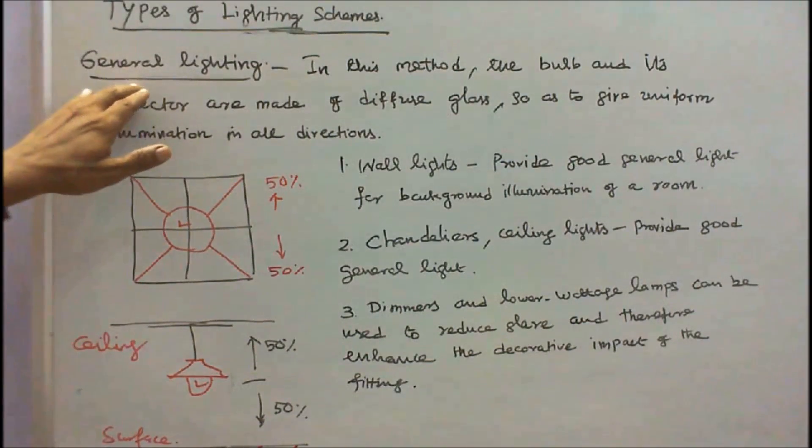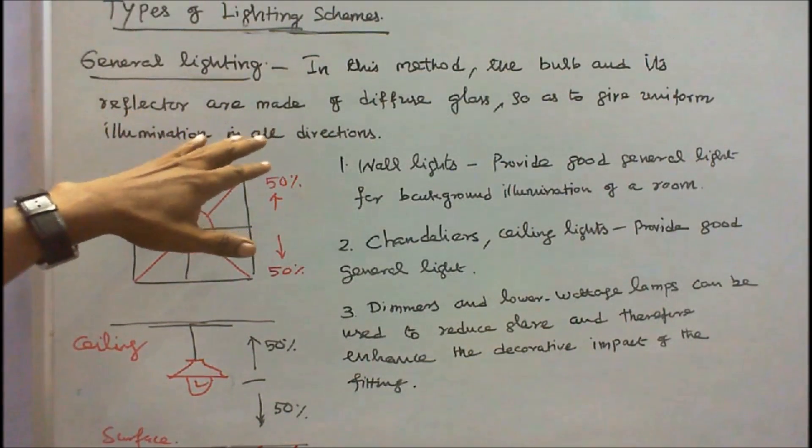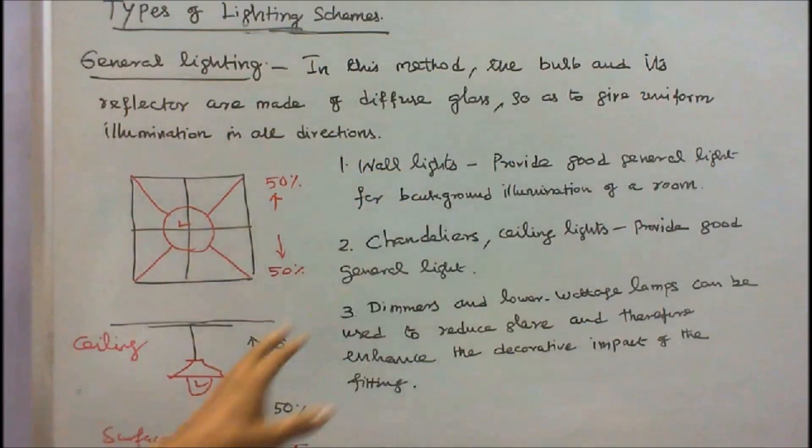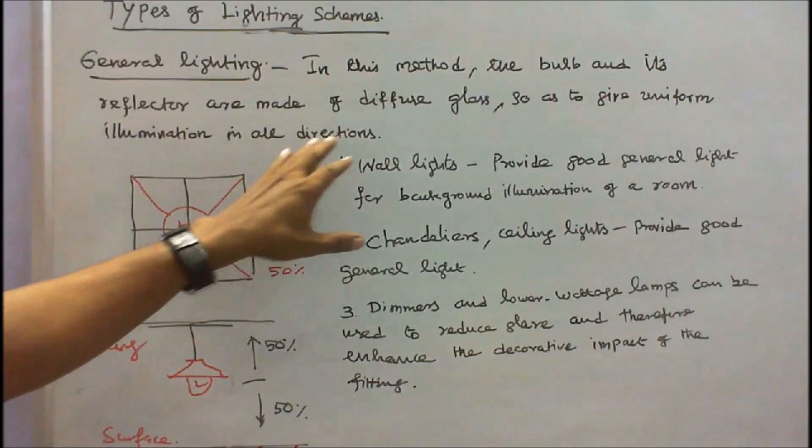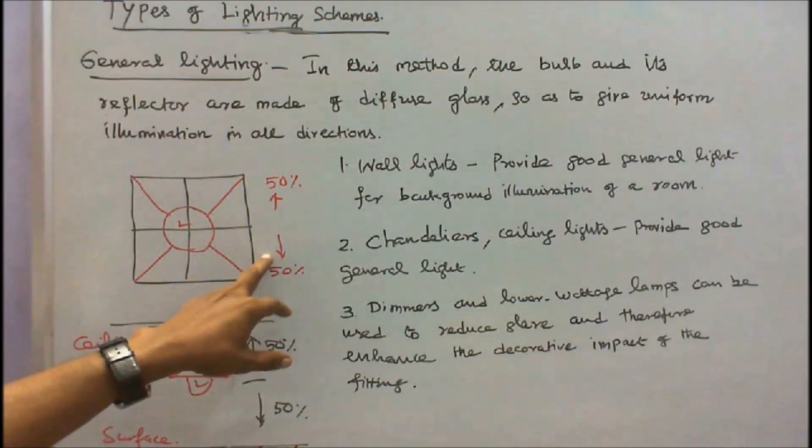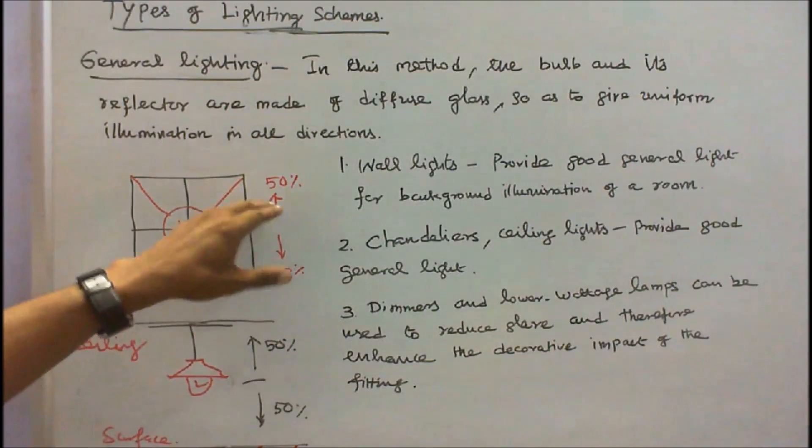Next is general lighting. In this method, the bulb and its reflector are made up of diffuse glass. This is diffuse glass. So as to give uniform illumination in all directions. Here, 50% is downward and 50% is upward.